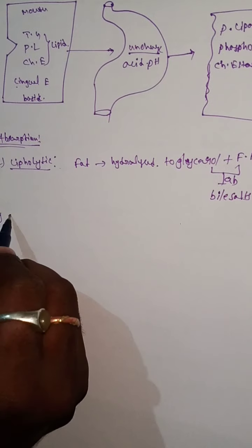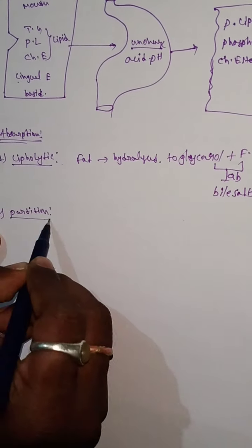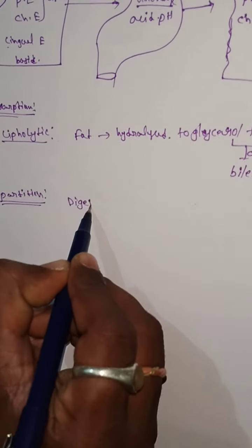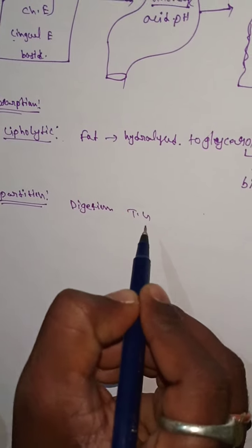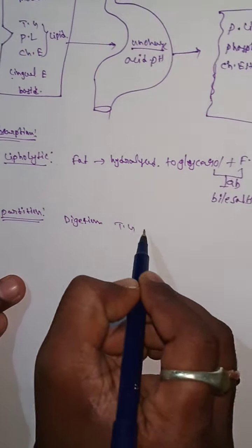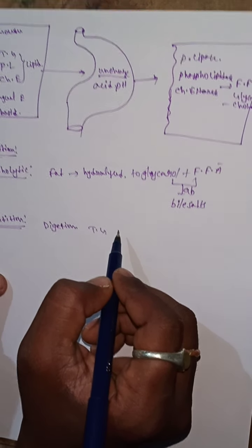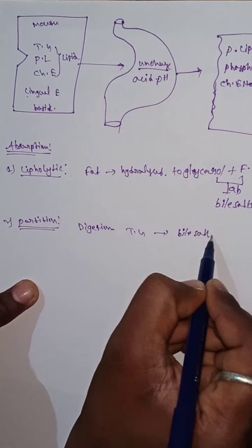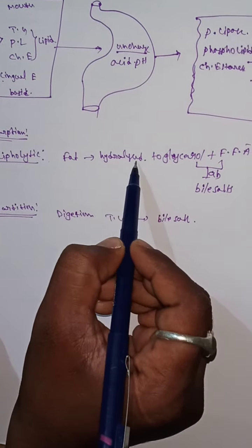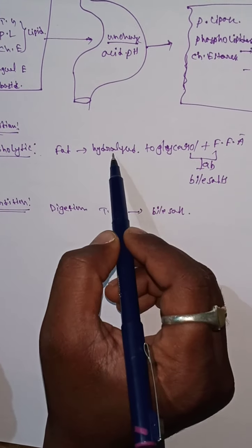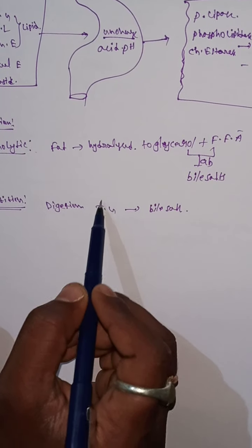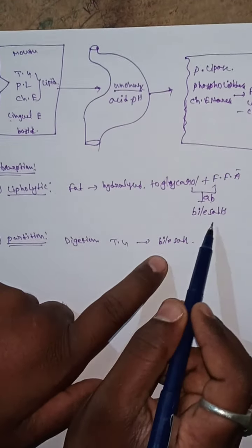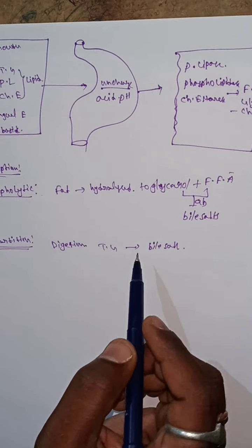The second theory is the partition theory. According to this theory, digestion of triglycerides is partial or incomplete. The partially digested triglycerides associate with bile salts. The main difference from the lipolytic theory is that here digestion is not complete — triglycerides are partially converted to glycerol and free fatty acids and then bind with bile salts for absorption.